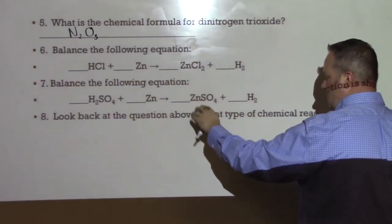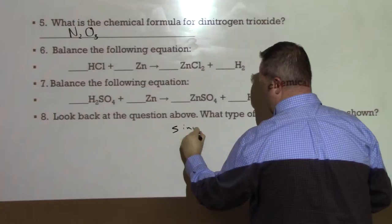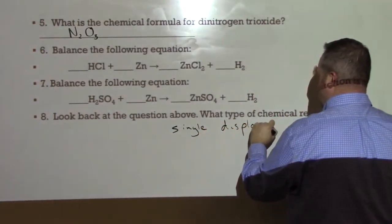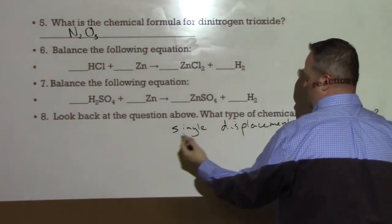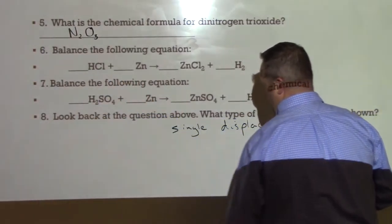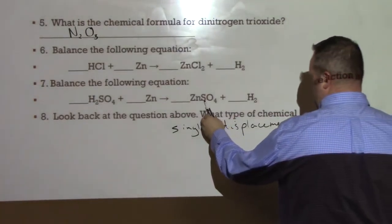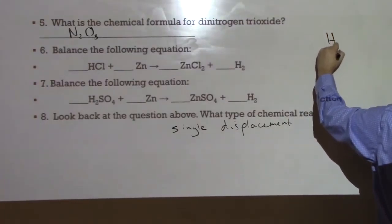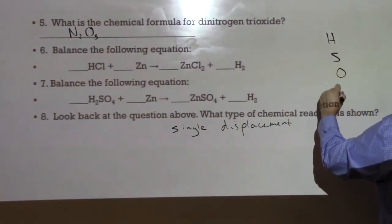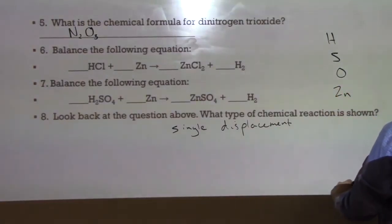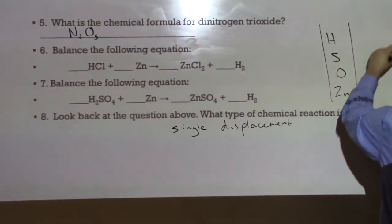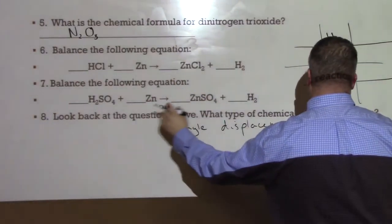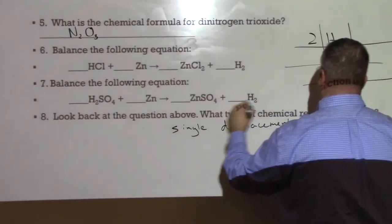Next question, number seven. We have H2SO4 reacting with zinc, and it results in a new compound, again, another single displacement reaction. That's our answer to the last question here, number eight, single displacement. And again, what's happening is you can see that zinc is displacing hydrogen, which results in this one new chemical compound. But let's look at what we have. We have hydrogen, we have sulfur, oxygen, and zinc. Okay, so we have four elements.